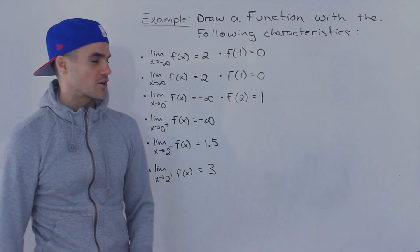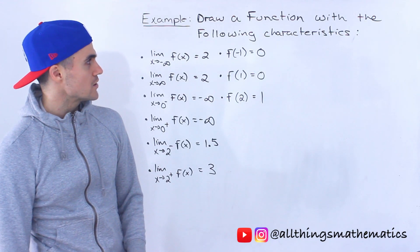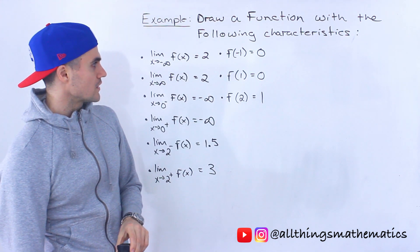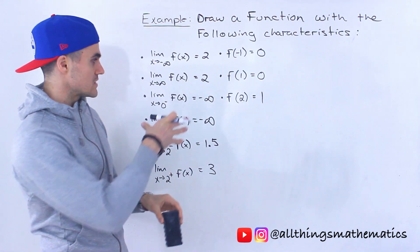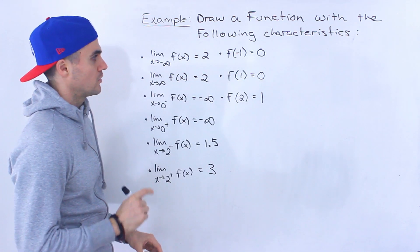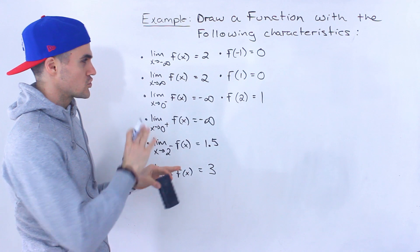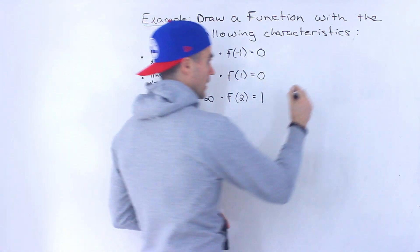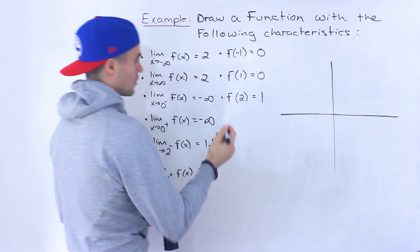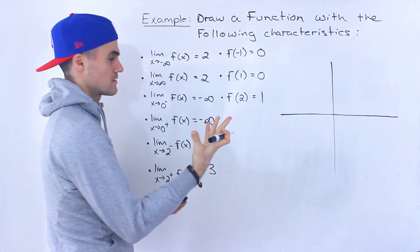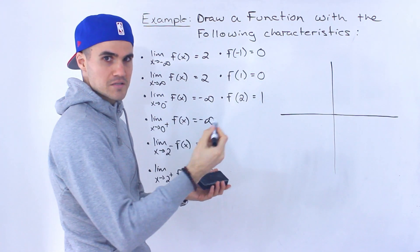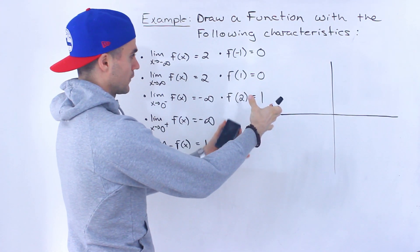Welcome back, Patrick here. Moving on to the next question, we have to draw a function with the following characteristics. We have a couple of limits and a couple of points, so I'm going to go through them one by one and try to connect everything into a diagram. The first thing I'm going to start with is any points that are given, because the points aren't really flexible — they're going to be actual points on the graph.